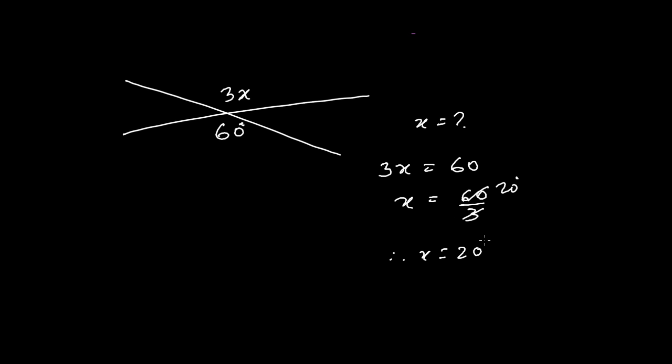So by using this, we have to solve a lot of types of problems. Like sometimes you'll get this is 3X, and this is 60 degrees. So what is the value of X? So that time, since these are vertically opposite angles, so simply you can write 3X equals to 60 degrees. And that time, X will be 60 degrees divided by 3, that is 20 degrees. Therefore, X equals to 20 degrees. So like this, you need to solve a lot of problems based on the vertically opposite angle. I hope you understand it.